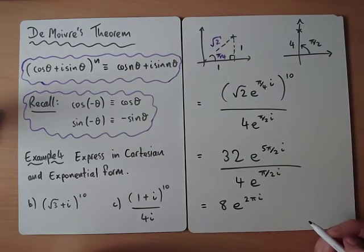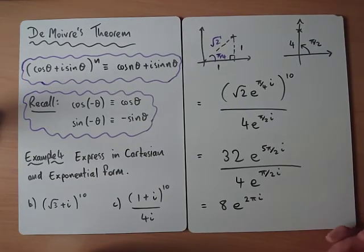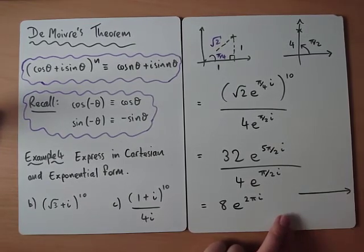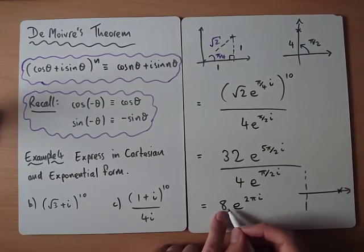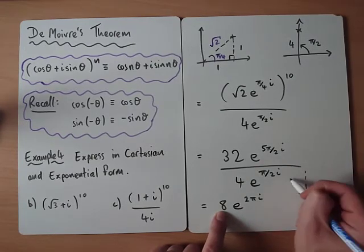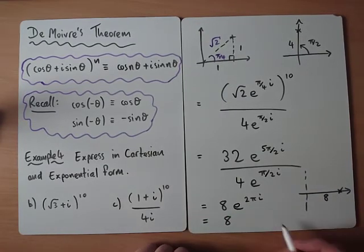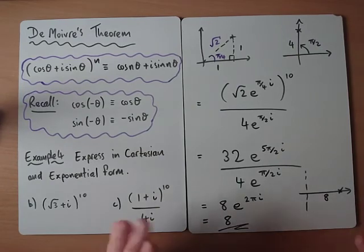We have to be careful here. We might lose a mark if we leave it as 8e^(2πi), because an argument of 2π means one full rotation — we're back on the real line. So e^(2πi) is equivalent to e^0 = 1, and the actual answer is just 8. In both exponential and Cartesian form, it is simply the real number 8.